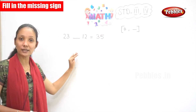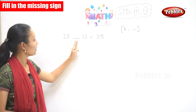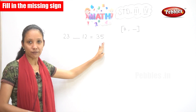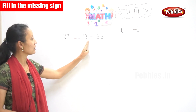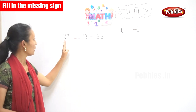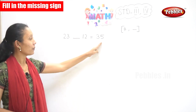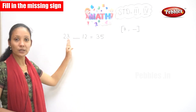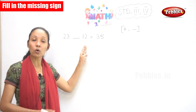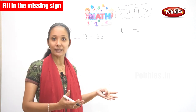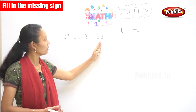So I will explain that to you. Now, 23 dash 12 gives you 35. This answer is greater than the two numbers given, isn't it? So when the answer is greater than the two numbers given, what will the sign be? Yes — you have been adding! That's right.